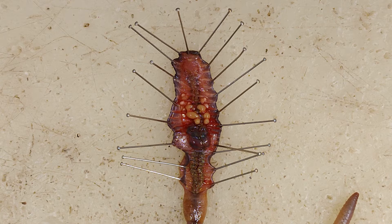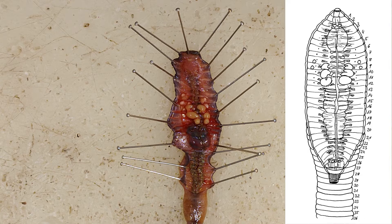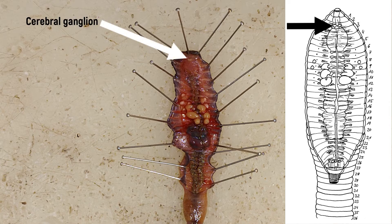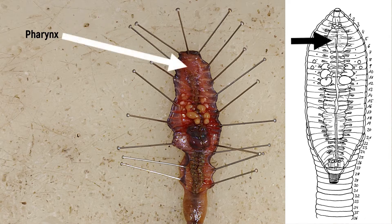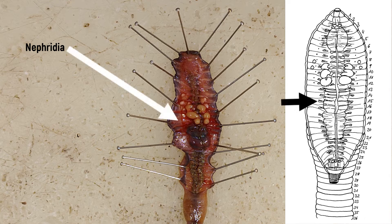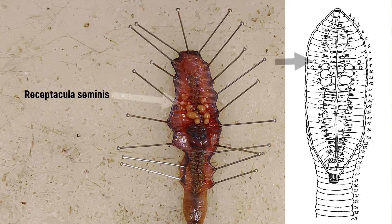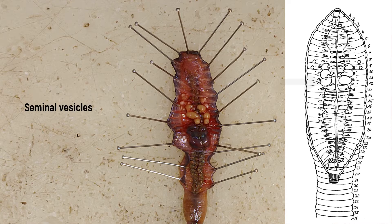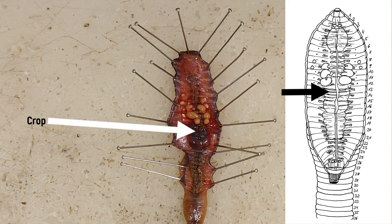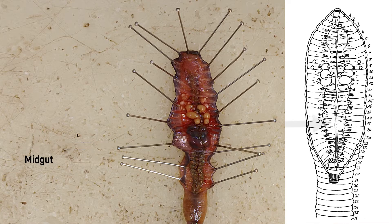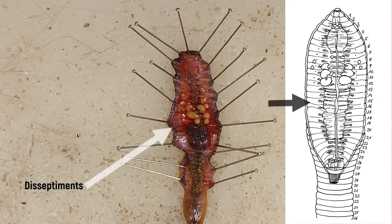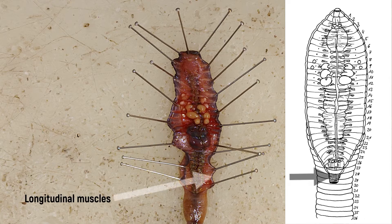The preparation can now be drawn. It is important to ensure that the segments are numbered correctly, as some of the organs are only in certain segments. It is essential to recognise the suprapharyngeal ganglion or brain, the pharynx, the nephridia, the lateral hearts, the esophagus, the four seminal receptacles, the six seminal vesicles, the crop, the gizzard, the midgut, the dissepiments, and the longitudinal and circular muscles.